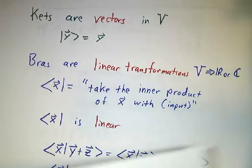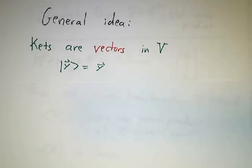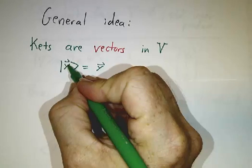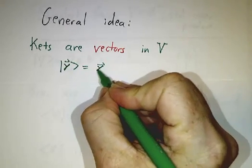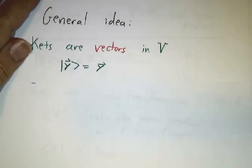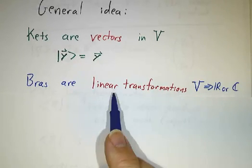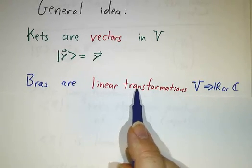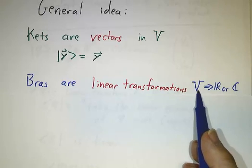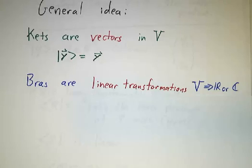So here we go. The idea is that a ket is a vector. Whenever we write the ket y, we just mean the vector y. Simple enough. But bras are different. Bras are not elements of our vector space V. Bras are linear transformations — things that send V to R if we have a real vector space, or to C if we have a complex vector space.